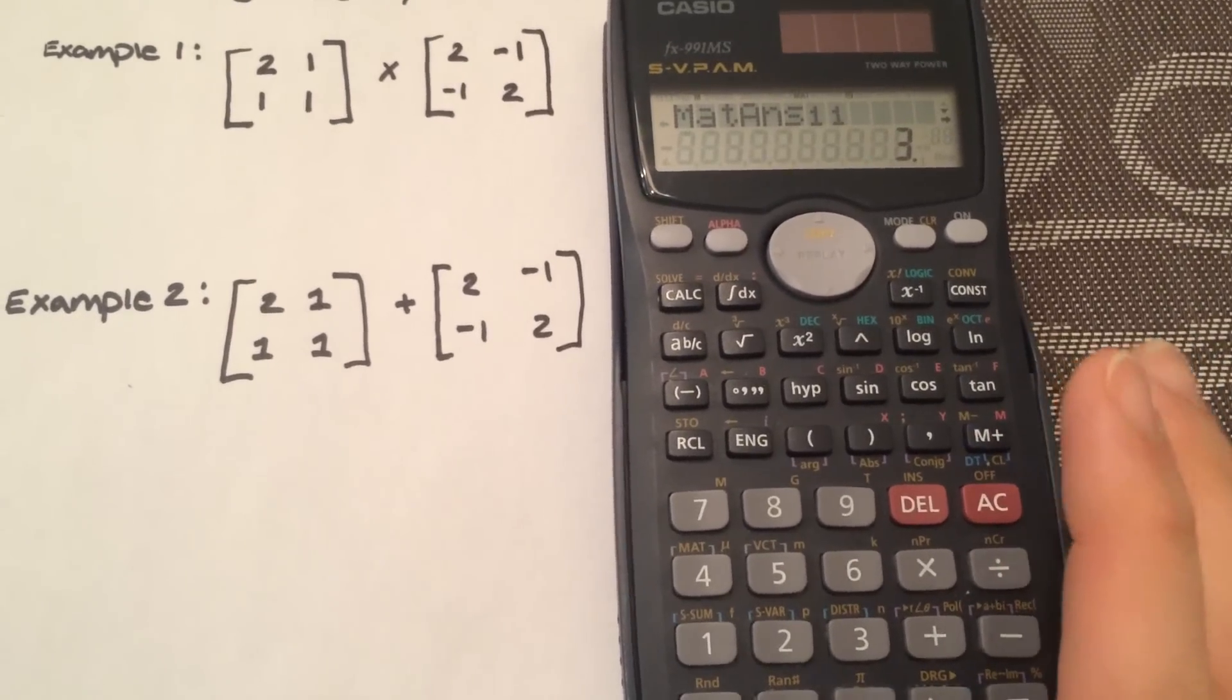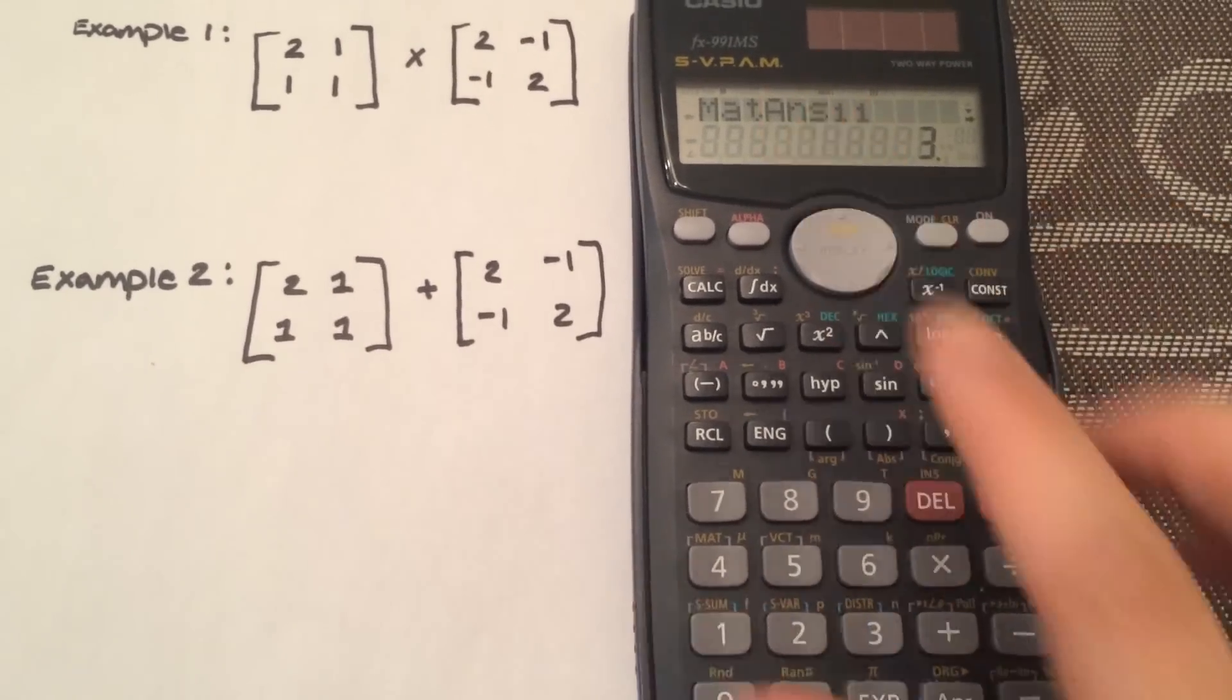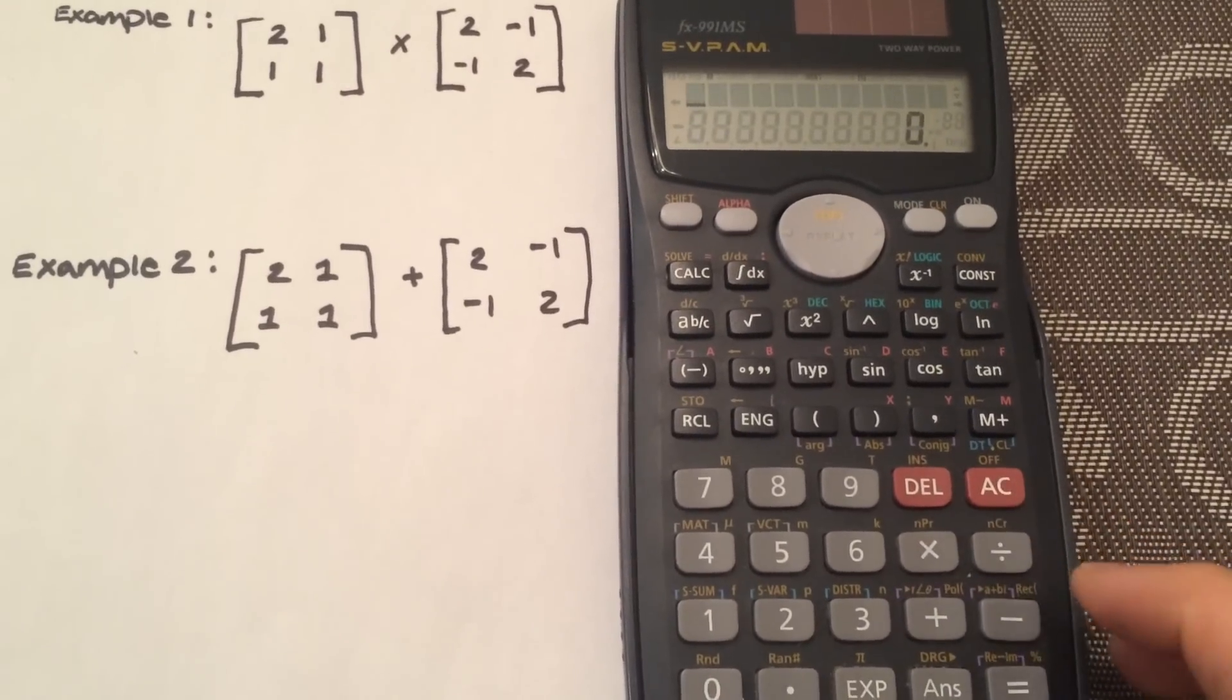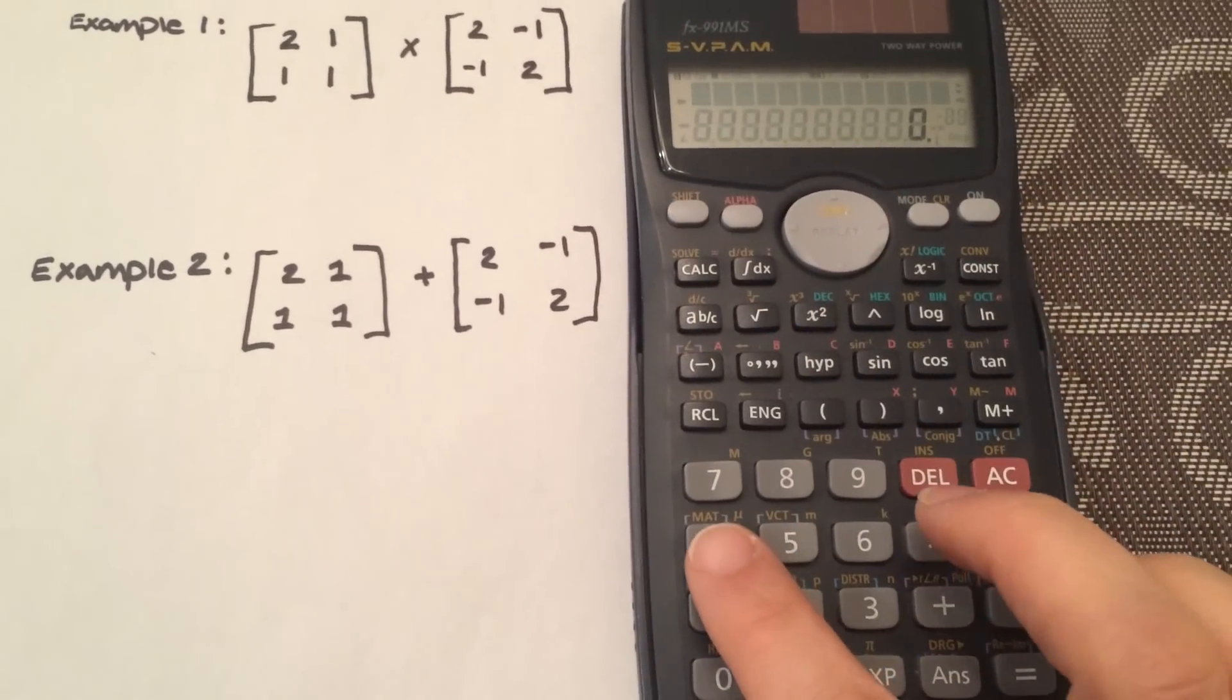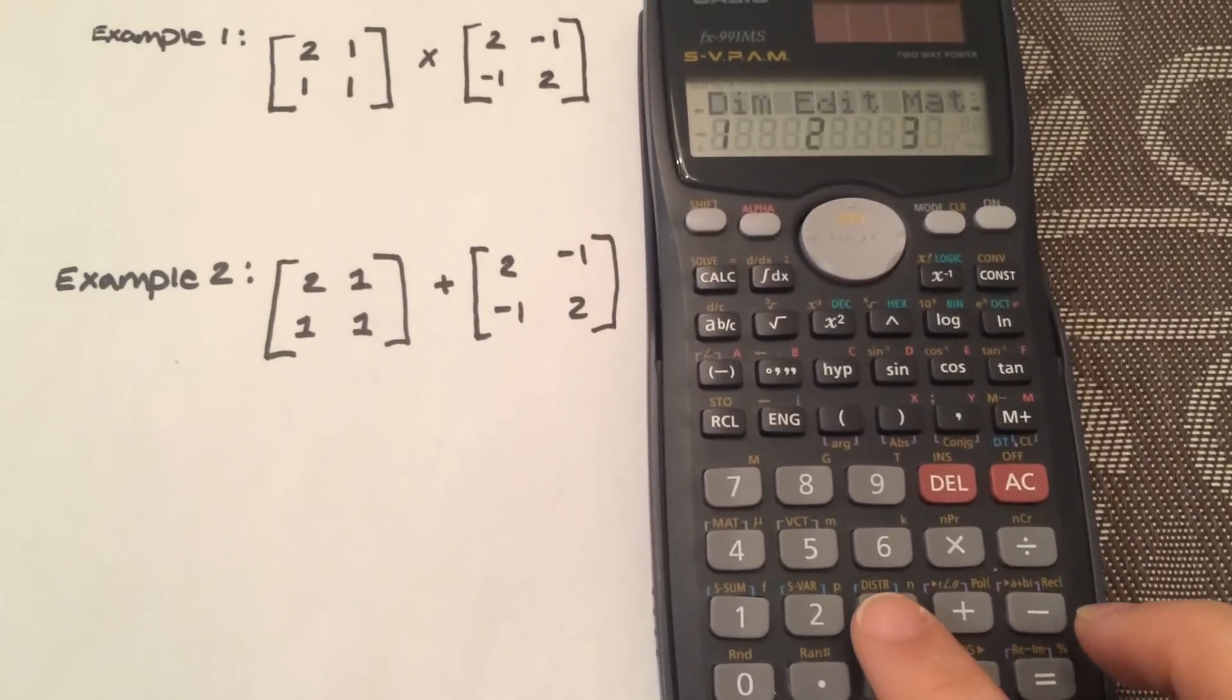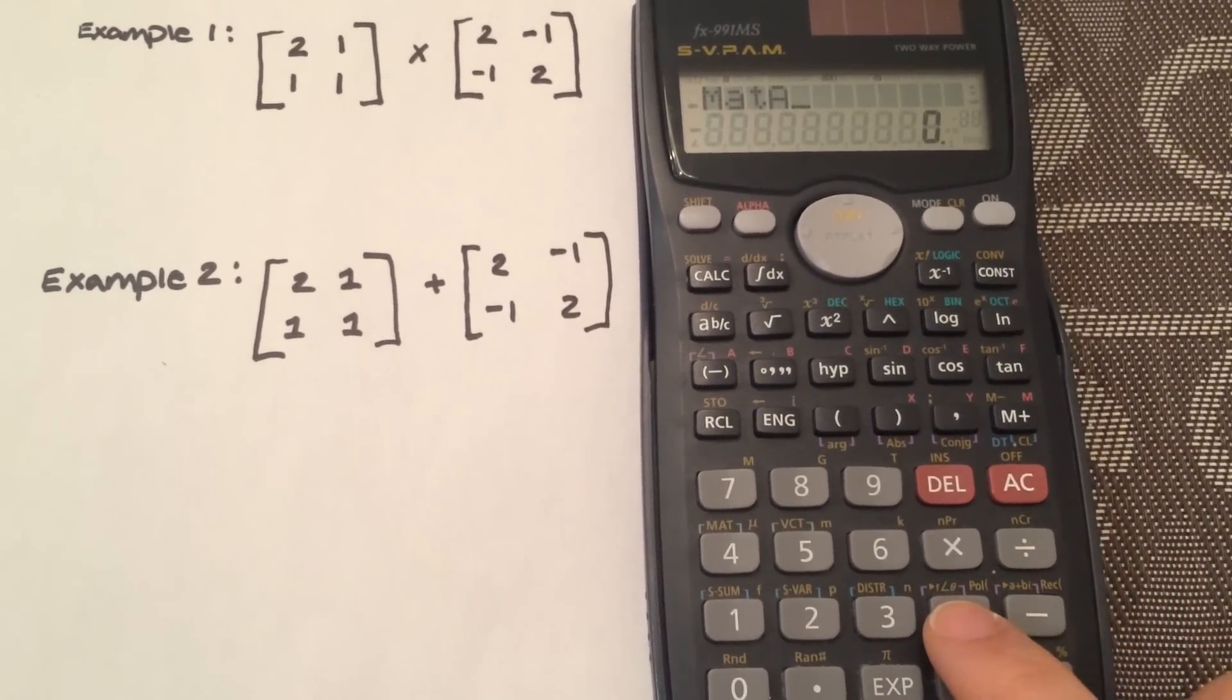Since I've already stored them in there, I can now do the addition simply by changing my multiplication to addition. So you're going to go shift 4, 3 for matrices. So again, matrix A, hit addition.